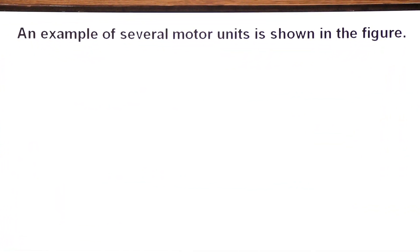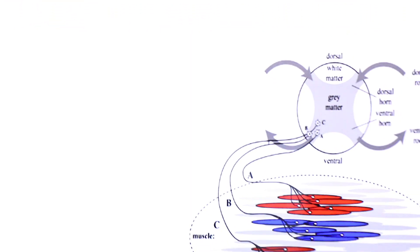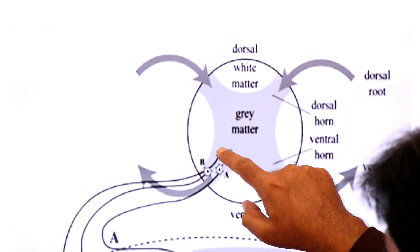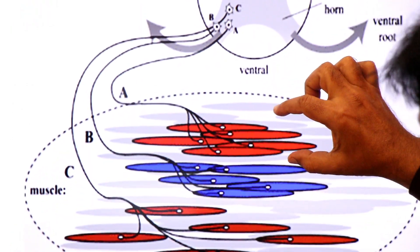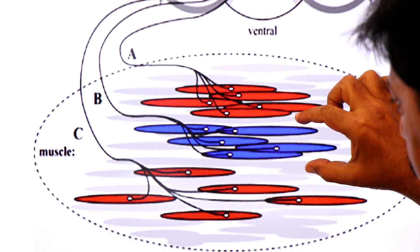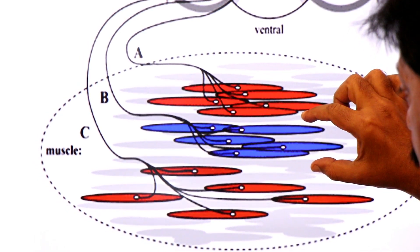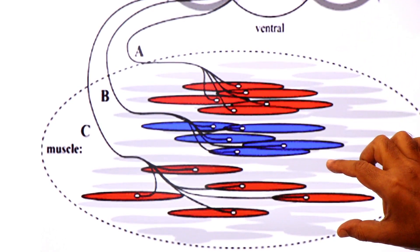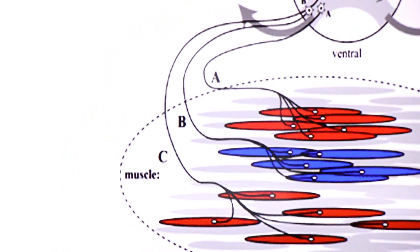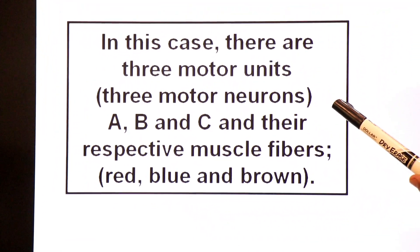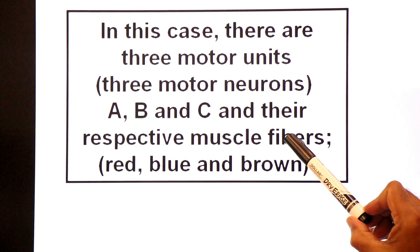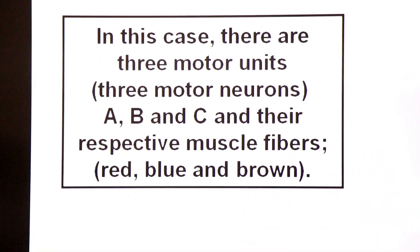Now we will take an example of several motor units shown in this figure. This is the spinal cord, and here you see motor neurons 1, 2, 3 and motor units A, B, C. Motor unit A has muscle fibers shown in red colour. The second motor unit has muscle fibers shown in blue colour. The third motor unit has muscle fibers shown in brown colour. So there are three motor units with three motor neurons A, B, and C, and their respective muscle fibers in red, blue, and brown.